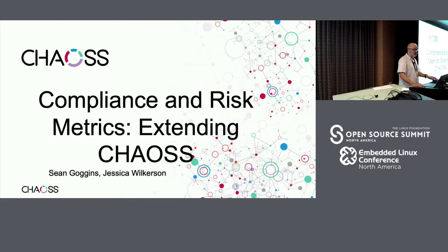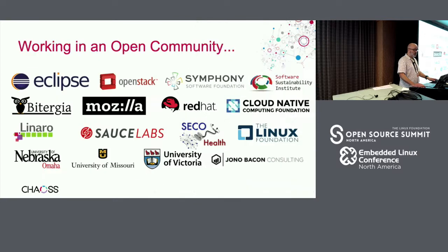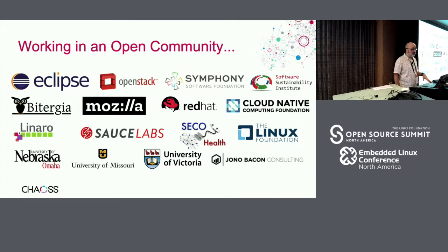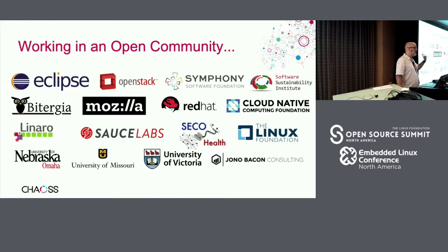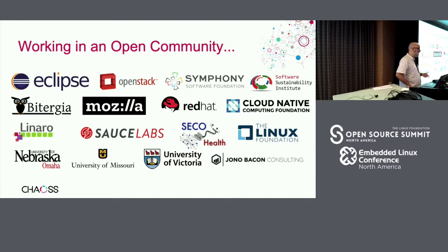I'm going to show you some of the risk metrics and elicit a little conversation from you about what those metrics are, and then facilitate a conversation to talk about your questions, your concerns, with regards to measuring risk in open source software. Compliance and risk metrics are an extension of CHAOSS — they're one of a number of working groups. CHAOSS has the support not only of the Linux Foundation, but a number of other organizations.